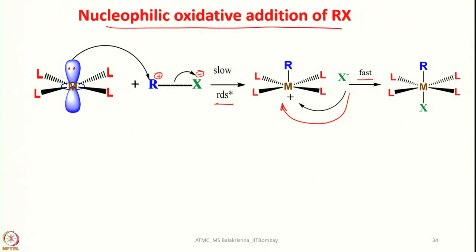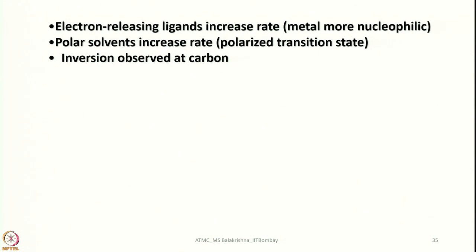This is the path followed by most polar substrate molecules. Regarding factors that affect the rate: electron-releasing ligands producing electron-rich metals — which are ready to lose a couple of electrons — make the metal more nucleophilic and increase the rate. Polar solvents also increase the rate because a polarized transition state is involved. Inversion is observed at a chiral carbon center. These three factors are also true for concerted addition.